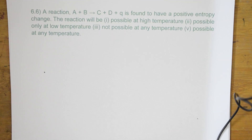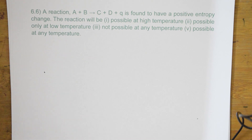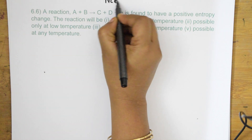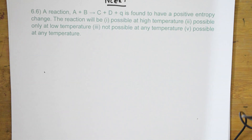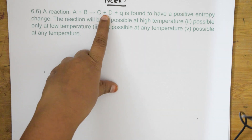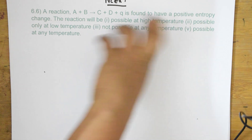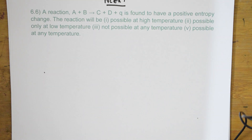Welcome back students to one more set of NCERT questions. We have already done the first five questions of NCERT. This is question 6.6 of chemical thermodynamics. They give us a reaction A + B → C + D + Q, which is found to have a positive entropy change.